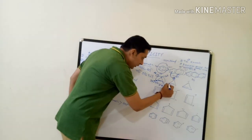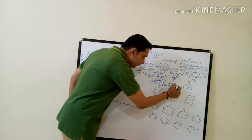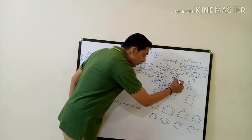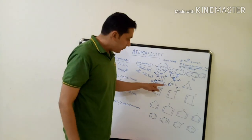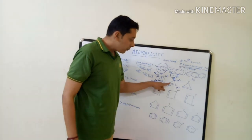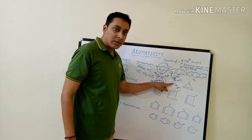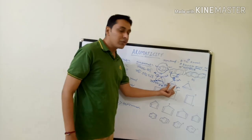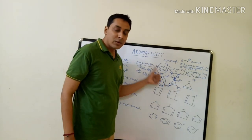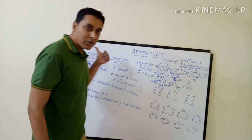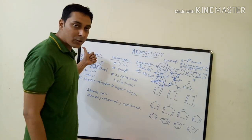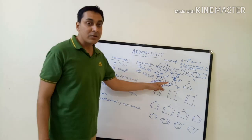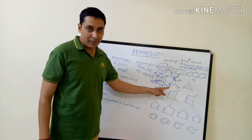In the three-membered ring with a positive charge, each carbon is sp2-hybridized. It has one pi bond containing two pi electrons. This system obeys Hückel's rule — 4n+2 pi electrons where n=0 gives 2 pi electrons — so this compound is aromatic.